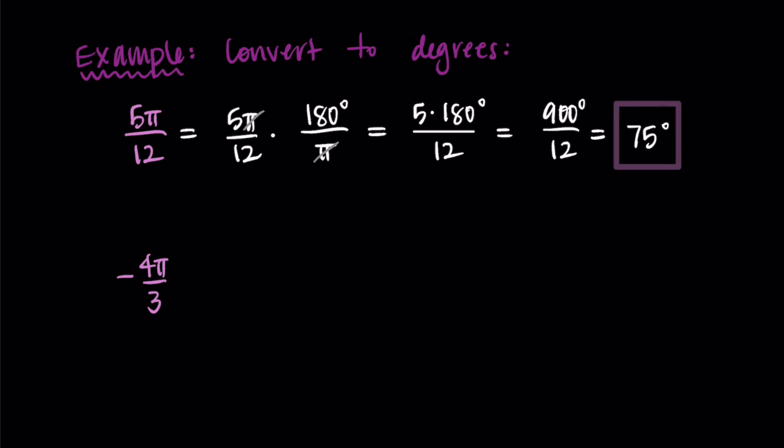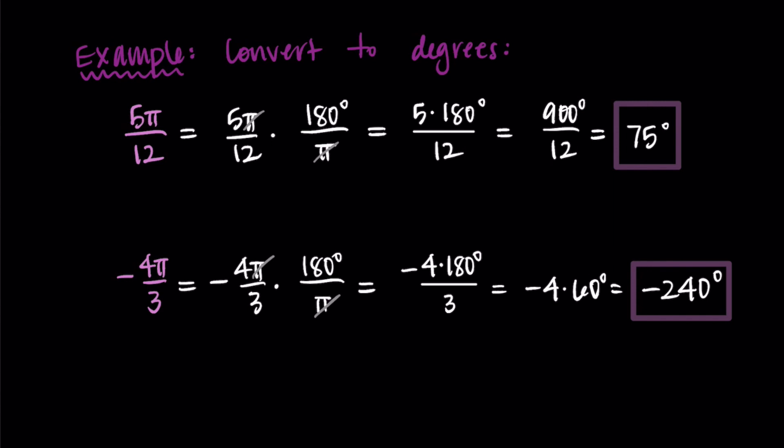Let's do this again for negative 4π over 3. So I take negative 4π over 3 and multiply by 180 over π. My π's will cancel out as will the radians, and so I'm left with negative 4 times 180 degrees divided by 3. So I did 180 degrees divided by 3 and got 60. So I have negative 4 times 60 degrees, and that's negative 240 degrees. And there we go. That is my degree measure for my negative 4π over 3 radians.